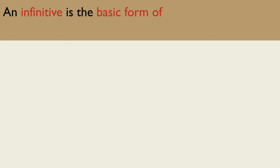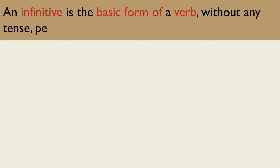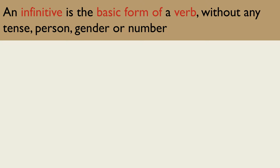An infinitive is the basic form of a verb, without any tense, person, gender or number. In English, the infinitive is usually preceded by the word 'to' — for example, 'to do.'